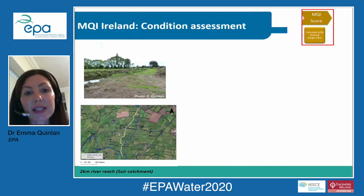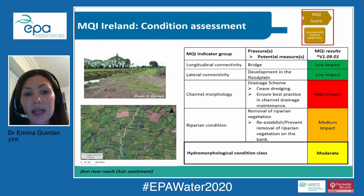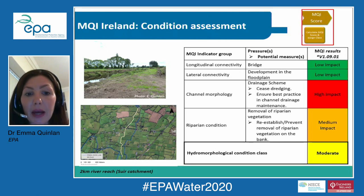Here is an example of a two-kilometer river reach for the condition assessment. You can see there has been channel maintenance — vegetation has been removed from the bank face and the bank top. When we look at the indicators and combine them, we get an overall hydromorphological condition class of moderate. You can see that the channel morphology and riparian condition indicators are driving this moderate class.